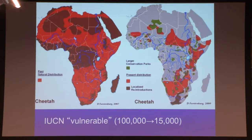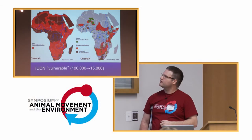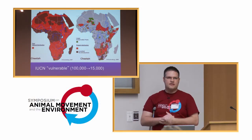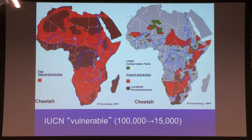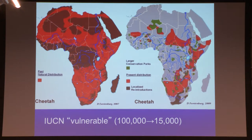Cheetahs used to be widespread across Africa in non-forested areas, right into Asia — like Iran where they still occur. The map on your left-hand side shows the red as the cheetah distribution about a hundred years ago, and on your right-hand side the red is the distribution right now. They do still get into Iran, but those populations are really weak.